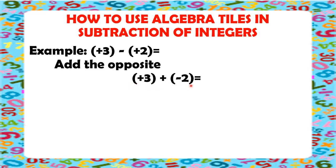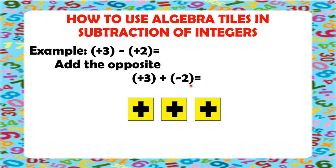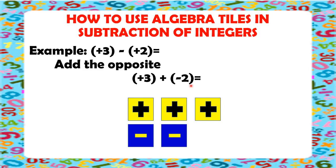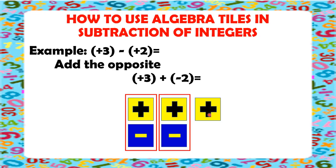So, positive 3 means we have 3 yellow tiles. Let's draw 3 yellow tiles. Negative 2 means 2 blue tiles. So, let's draw 2 blue tiles. Since we have all the tiles drawn in, we're just simply going to make 0 pairs. Remember that 1 yellow tile and 1 blue tile will always make 1 zero pair. So, this is our first 0 pair and we have another 0 pair. Let's count how many tiles we have left — we only have 1 yellow tile left, which means it is positive 1. Therefore, positive 3 minus positive 2 is equal to positive 1.